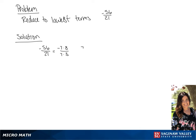We're going to rewrite this as 7 over 7 times negative 8 over 3. Since we know 7 over 7 is equal to 1, we get an answer of negative 8 over 3.